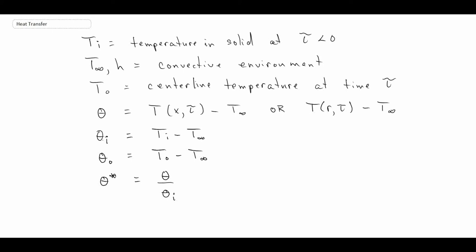There are a couple of non-dimensional numbers that are very important in heat transfer, especially transient heat transfer. The first is the Fourier number, given the symbol Fo, which is the thermal diffusivity times time divided by the characteristic length scale squared — either L or R-naught. The other is the Biot number, Bi, which we saw earlier with the lumped capacitance method. It is the convective heat transfer coefficient times a characteristic length scale divided by the thermal conductivity of the solid.